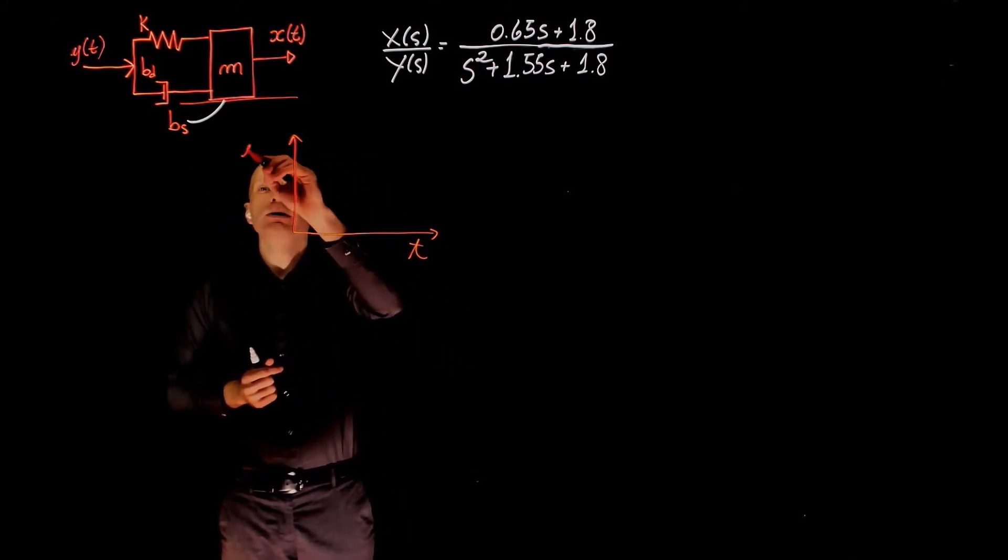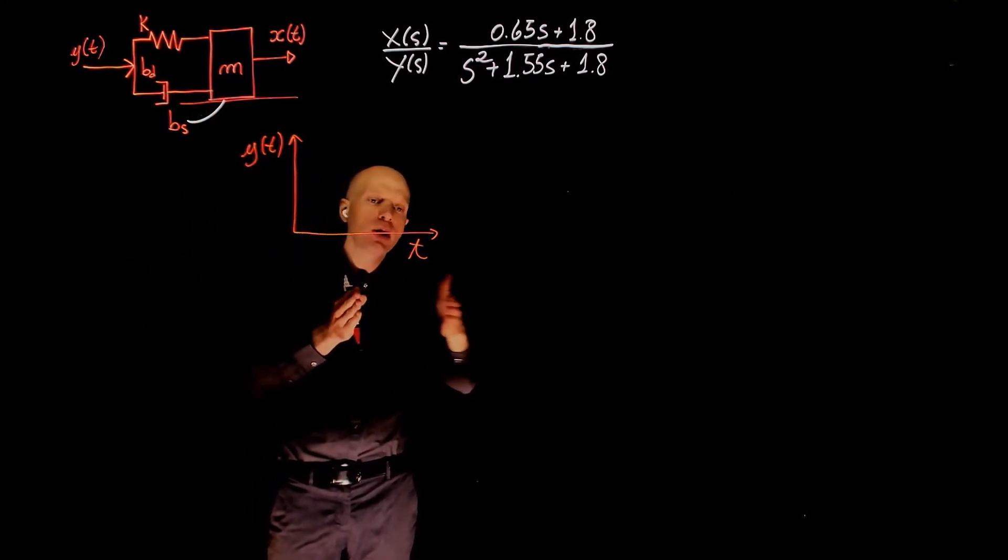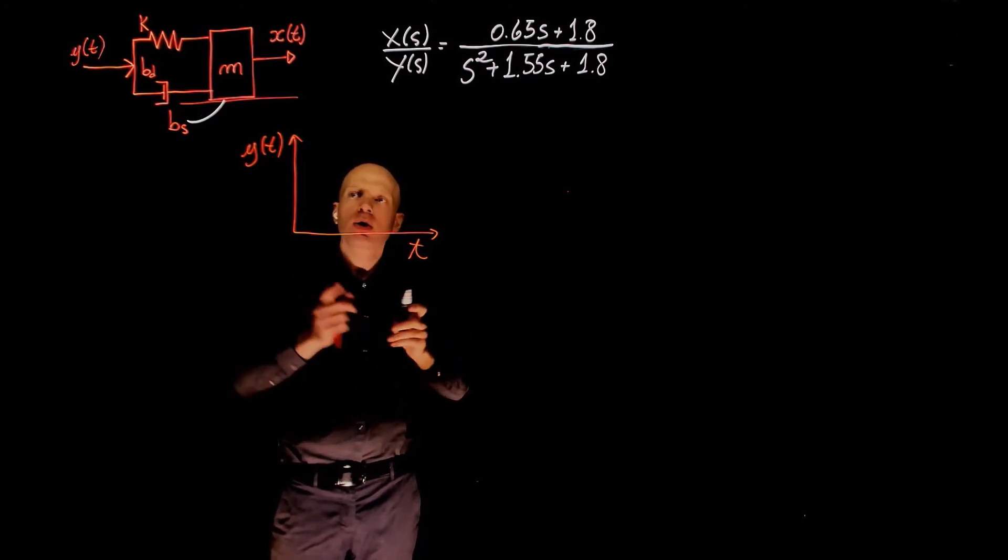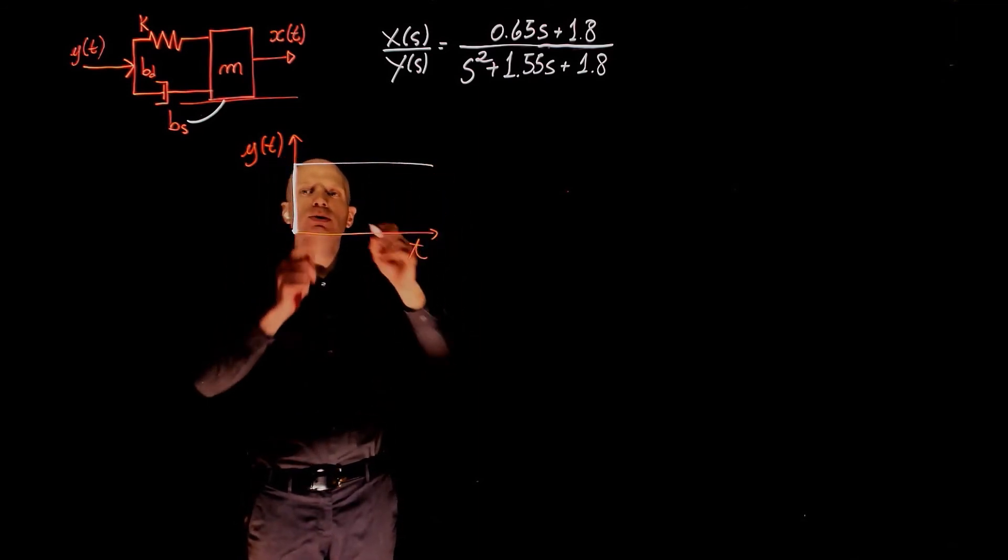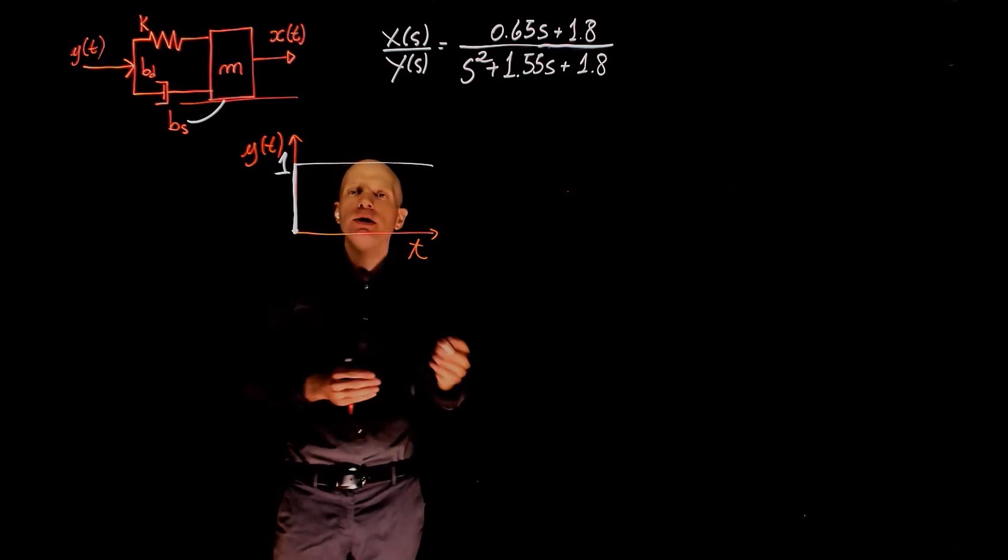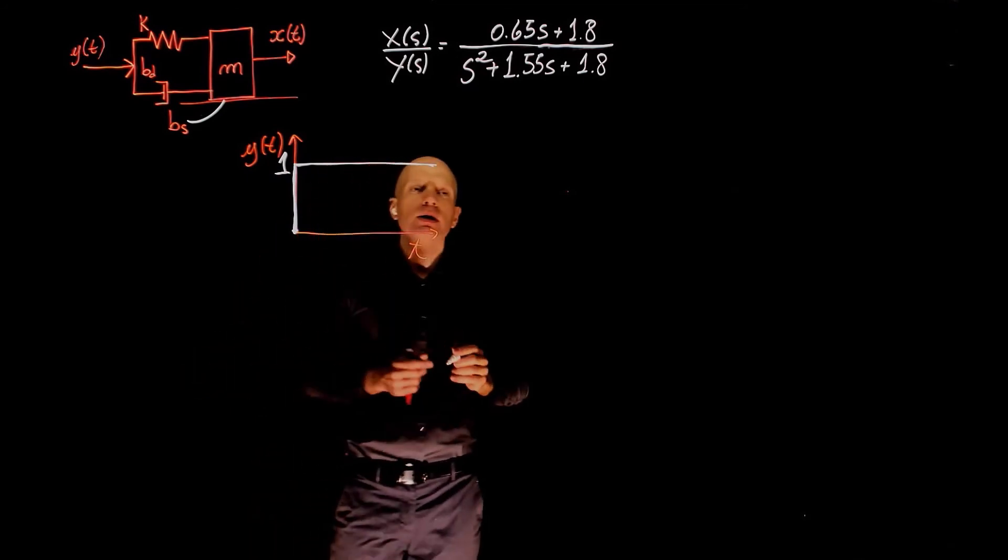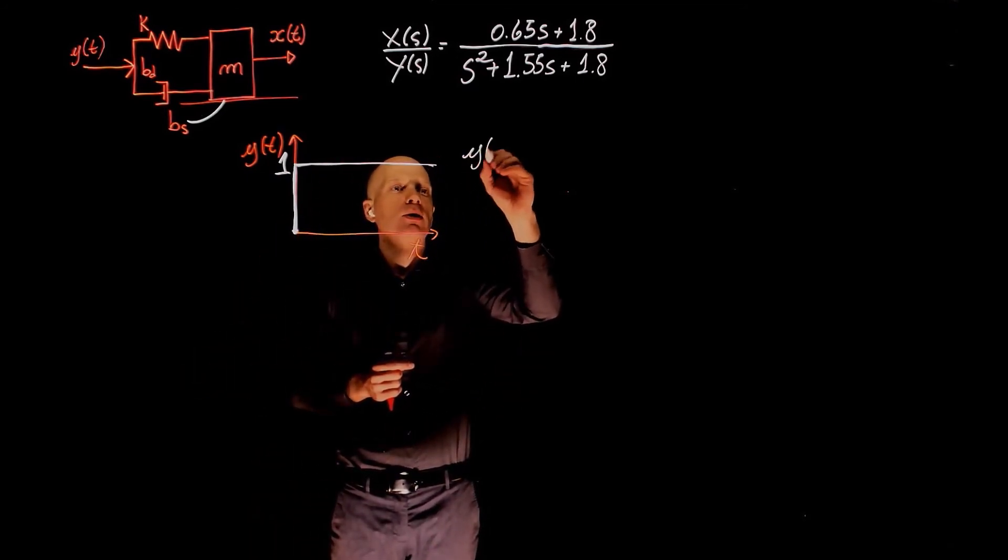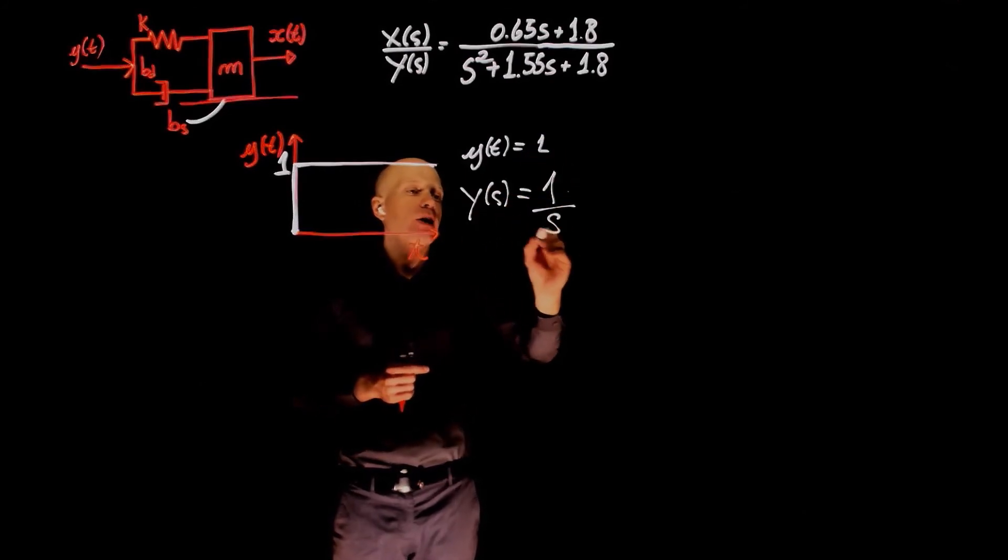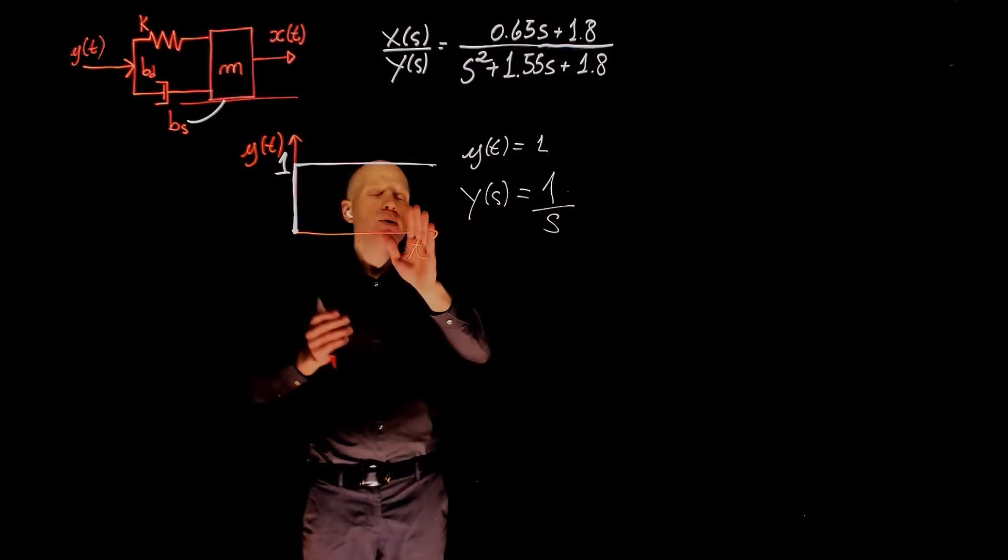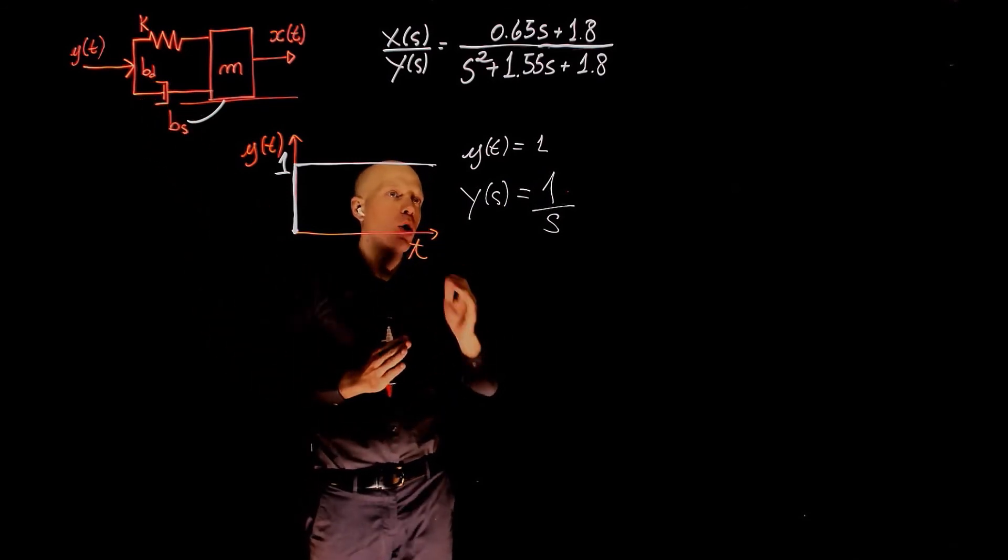If you plot the displacement y(t), and you are again pushing on the spring and damper here by one unit and holding that constant, we can plot this input as something that goes from 0 to 1 millimeter or 1 meter and stays at that value as time goes to infinity. This clearly represents a step input. y(t) equals 1, y(s) equals 1 over s. This again means that we are applying a displacement of one unit to this side of the spring and damper and holding that constant.